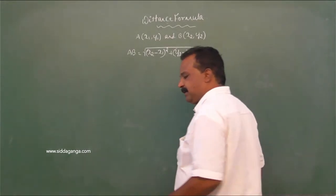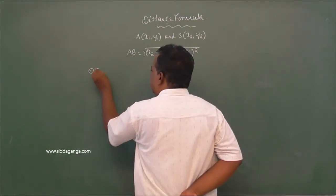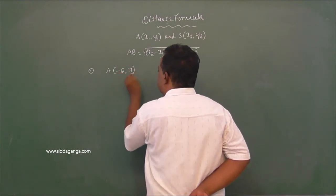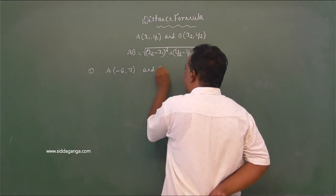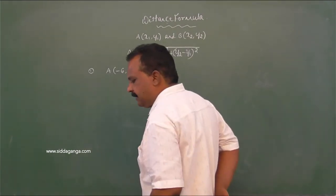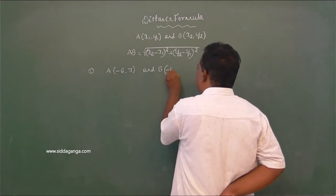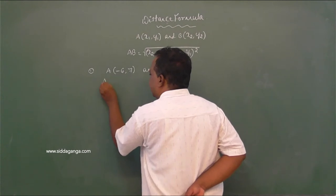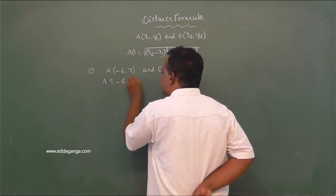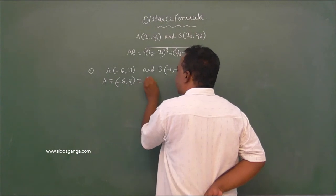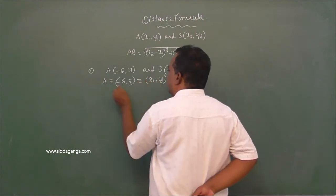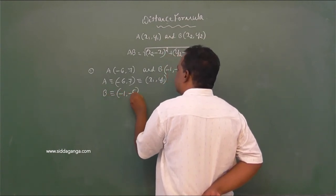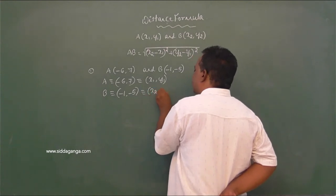Now let us take some simple problems. Find the distance between A(−6, 7) and B(−1, −5). So let us take (−6, 7) as (x1, y1). Similarly, take B as (−1, −5) which is equal to (x2, y2).